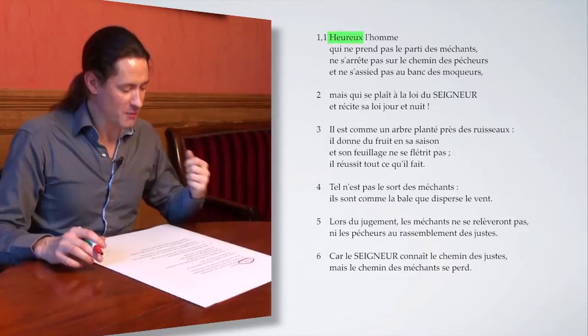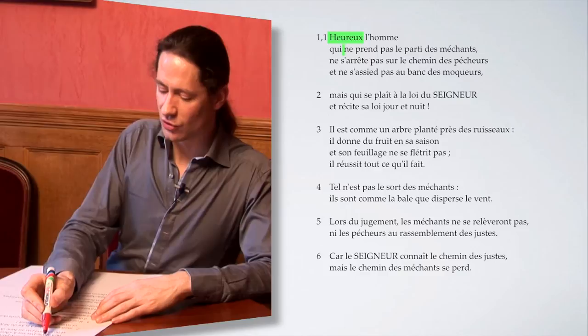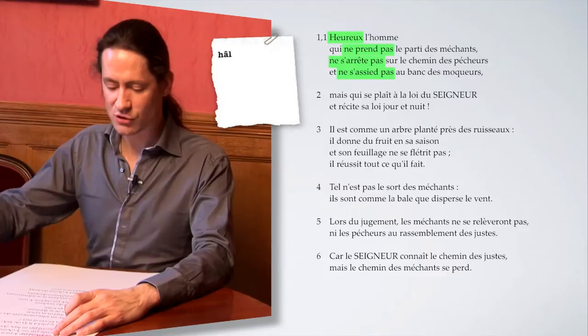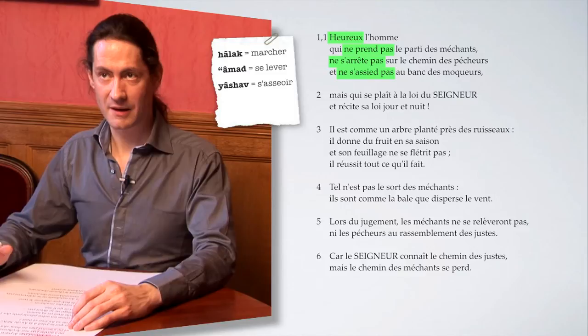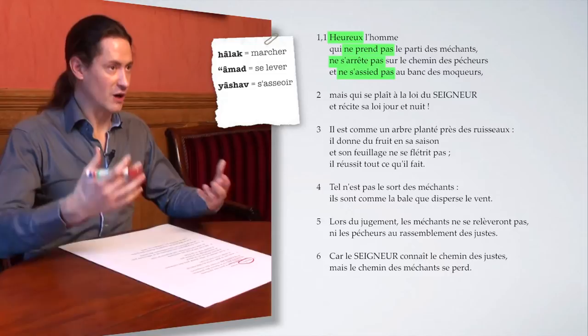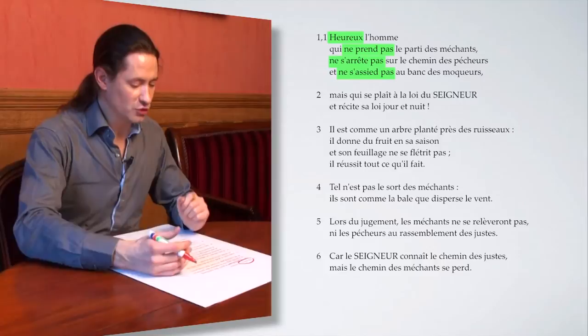Le rejet du mal, premièrement, est exprimé ici au premier verset par trois négations : ne prends pas, ne s'arrête pas, et ne s'assied pas. En réalité, les trois verbes hébreux utilisés ici sont ne marche pas, ne se lève pas, et ne s'assied pas. Nous avons ici trois postures majeures exprimées en creux : marcher, être debout, être assis, qui représentent au fond l'ensemble de notre vie, de nos activités, de nos rapports.